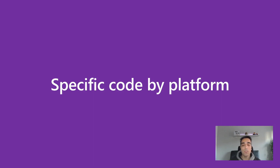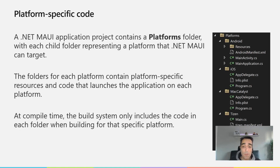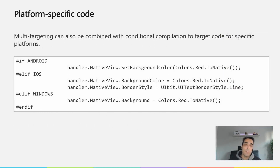To use platform-specific code, a .NET MAUI application project contains the platforms folder, which contains a child folder representing each platform .NET MAUI can target: Android, iOS, Mac Catalyst, Tizen, and Windows. In these folders we can include classes, and at compilation time the build system will include the code in each folder only when building for that specific platform. Outside of these folders, we can use compilation directives to conditionally compile platform-specific code — for example, using #if ANDROID or #if IOS in a shared class.